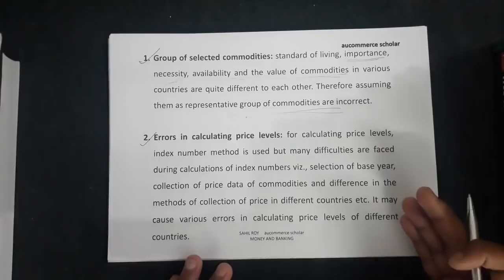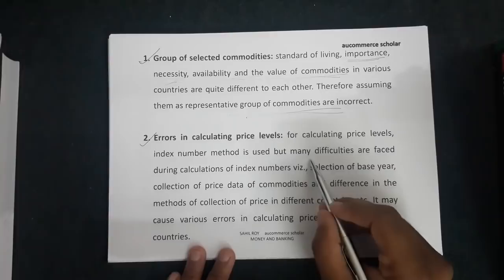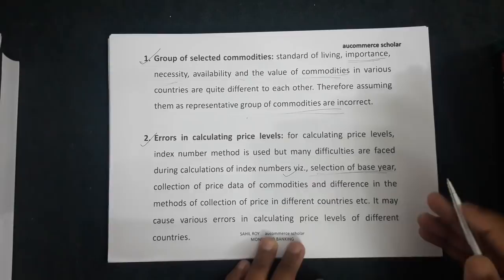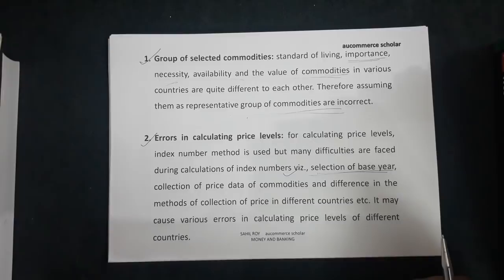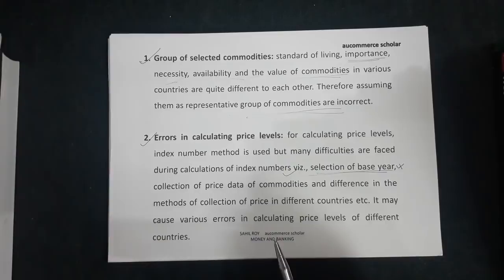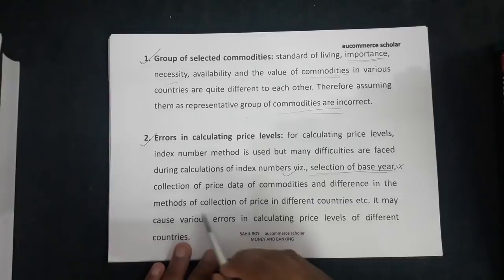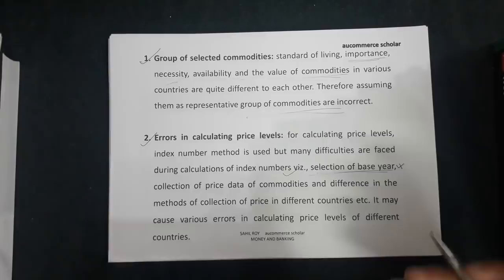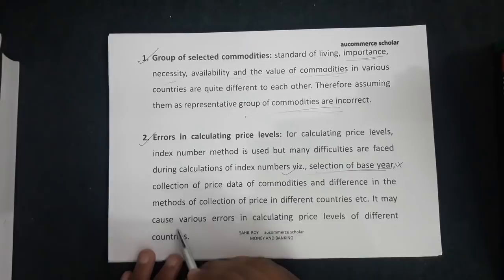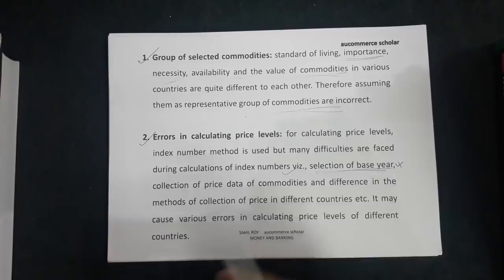The second criticism is errors in calculating price levels. For calculating price levels, the index number method is used, but many difficulties are faced during calculations of index numbers. Some people take 2015 as the base year and some take 2012 — so there is difficulty in the selection of base year. Additionally, collecting price data of commodities across different countries, where different things have different rates, is also difficult.